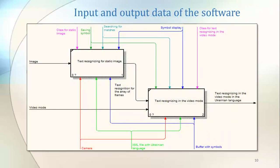Here on this slide you can see the input and output data of the software. The output data of the software product is the recognized text with graphically drawn frames around it, so that the user can click on the text and it is voiced as a result.